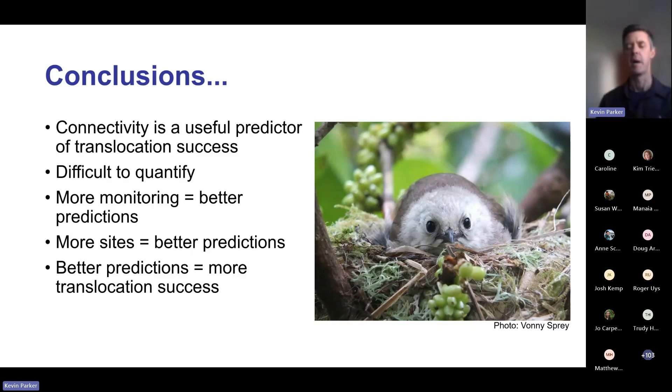However, translocation to big connected mainland sites is the final frontier for getting a lot of our birds back in the bush where they used to be. To do this really well, we need more monitoring, because more monitoring means better predictions. We also need more sites - a translocation is essentially n equals one, but more sites with good monitoring means better predictions. Better predictions mean more translocation success, which basically means we get lots of lovely little female popocatia like this sitting tight in the nest, having lots of babies and repopulating all those places where they used to live. Thank you.